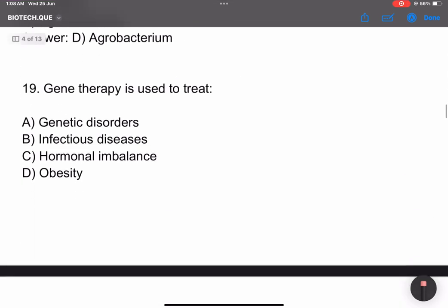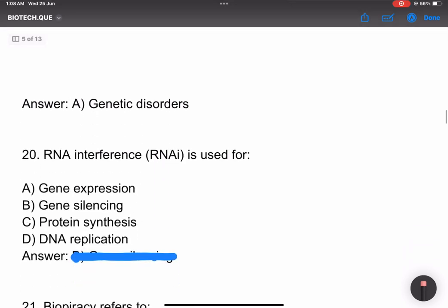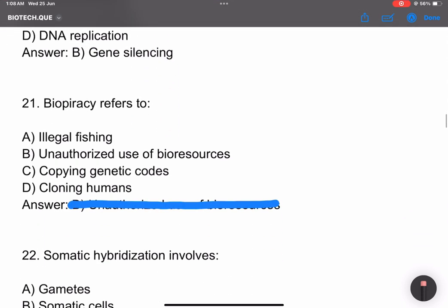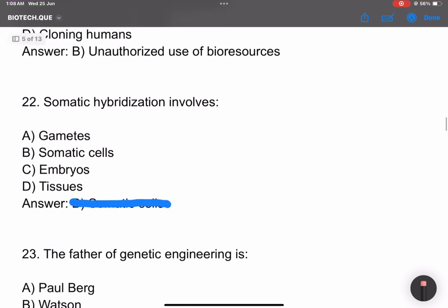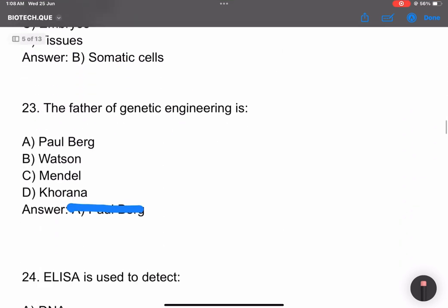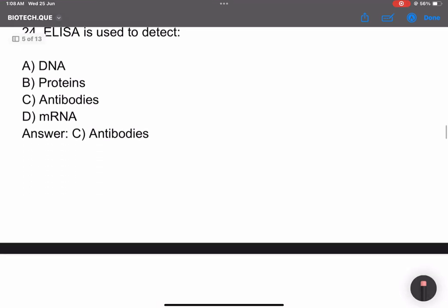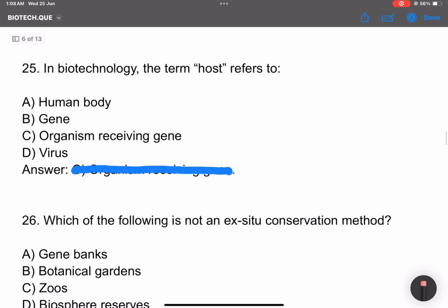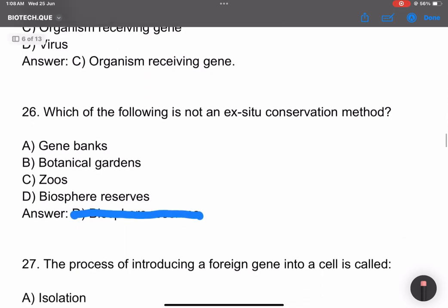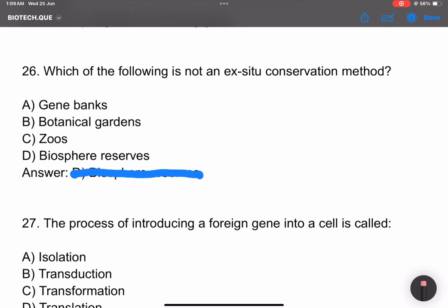Ti plasmid is derived from Agrobacterium. Gene therapy is used to treat genetic disorders. RNA interference is used for gene silencing. Biopiracy refers to unauthorized use of biological resources. The father of genetic engineering is Paul Berg. ELISA is enzyme-linked immunosorbent assay, used to detect antibodies.